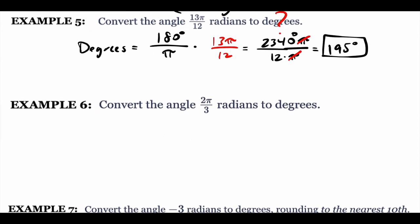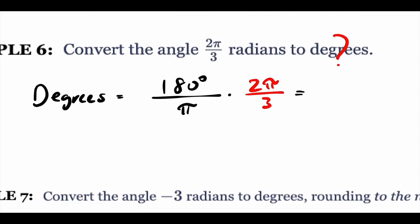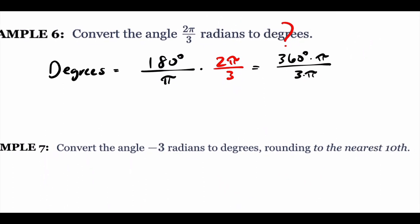Now 2pi over 3. I don't know what degrees are, so degrees equals 180 degrees over pi times 2pi over 3. Multiply straight across: 180 times 2 is 360 degrees times pi, over 3 times pi. Divide out the pi's. Then 3 goes into 360 — that's 120 degrees.